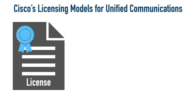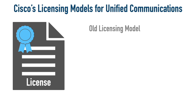One of the topics Cisco says we need to know about for the CL Core exam is how licensing works for Cisco Unified Communications. They give us two different licensing models that we should know about, and these are both different from the traditional licensing model. In the past, when I would buy software like Cisco Unified Communications Manager, it would come in a cardboard box with a DVD and a card containing what was called a PAK — a Product Authorization Key.